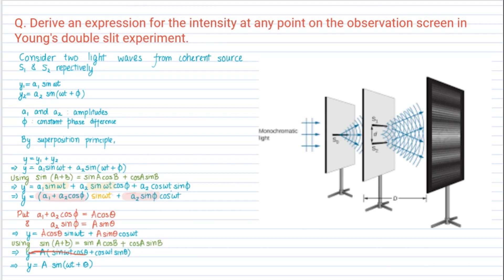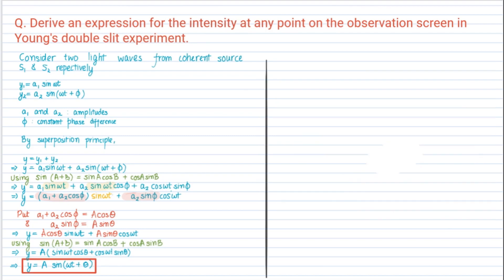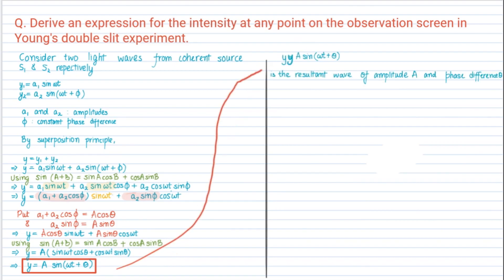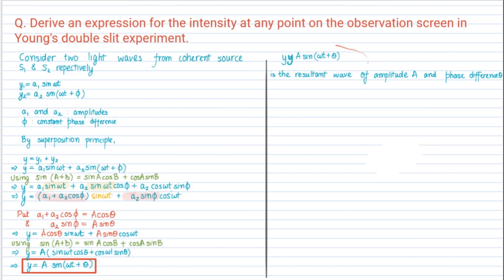So this is the resultant displacement: y = A sin(ωt + θ), where A represents the amplitude of the resultant wave and θ represents the constant phase difference. This is the expression for the resultant wave. Now let's find the expression for this amplitude A.